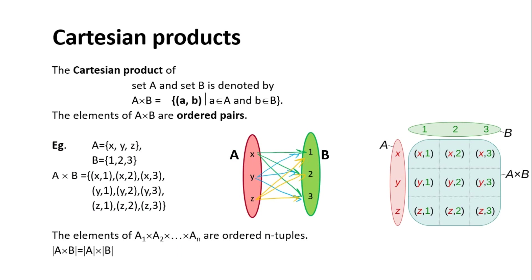For understanding relations, let's revise the Cartesian product. The Cartesian product of set A and set B is denoted by A cross B, which equals ordered pairs (a, b) such that the first element a belongs to the first set and b belongs to the second set. The elements of A cross B are ordered pairs.